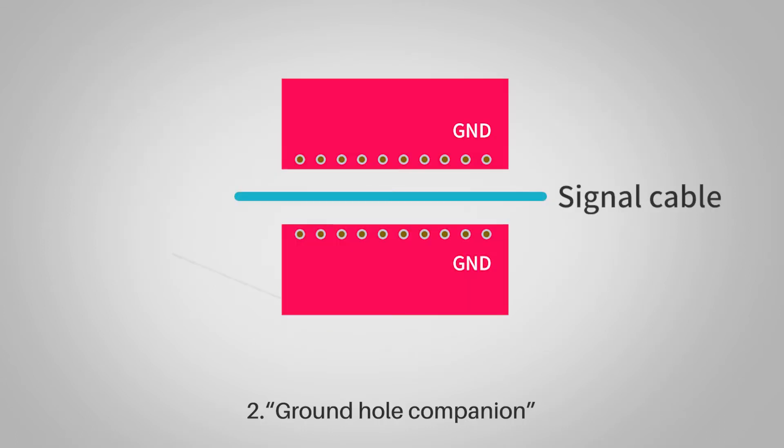Rule two: ground hole companion. Set as many vias as possible near the signal line to reduce the parasitic inductance of vias.